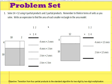Let's look at something from the problem set. We're going to solve 14 times 12 using partial products, using four partial products and using two partial products. Remember to think in terms of units as you solve. Write an expression to find the area of each smaller rectangle in the area model.